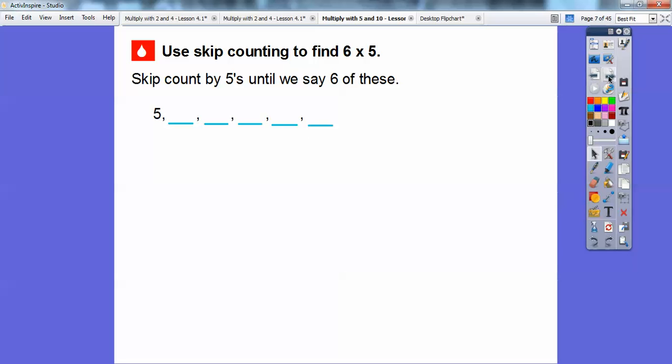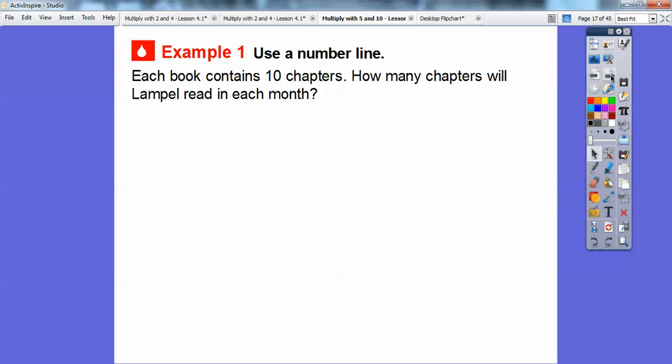Five, five times two is ten, fifteen, twenty, twenty-five, thirty. So there's six times five right there. Six times five is going to be thirty. So Lampelle plans to read thirty books in six months. She does five books a month, and she's going to do it for six months.